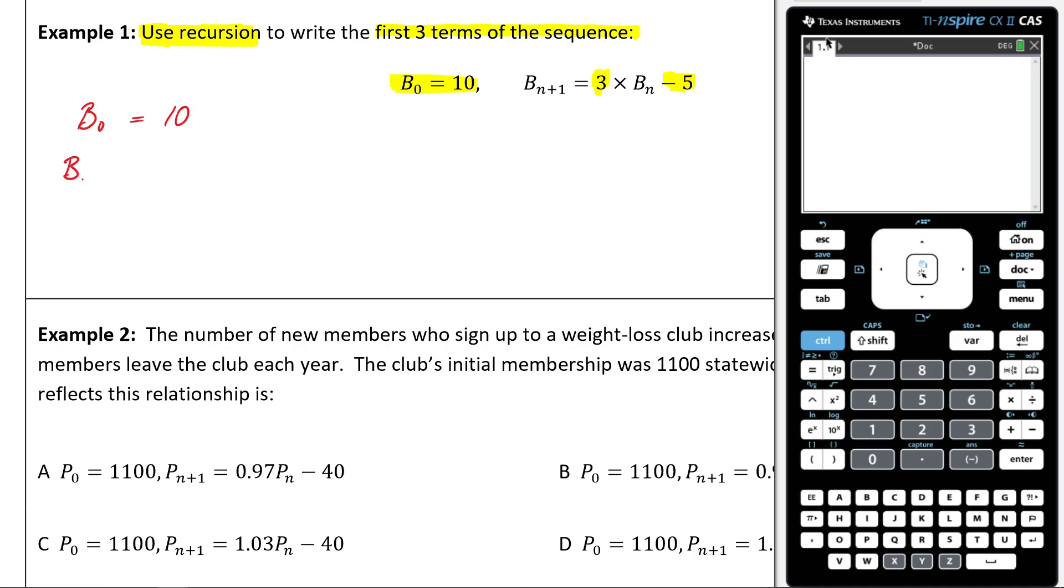So we're going to go B_0 is equal to 10. Then B_1 is going to be equal to, now I'm going to go three times 10 minus five. Three times 10 is 30 minus five will be 25. Then I'm going to figure out what B_2 is. I'm going to go three times 25 minus five. That's going to be 70. And then I'm going to go what B_3 is. So I'm going to go three times 70 minus five. That's going to be 205.